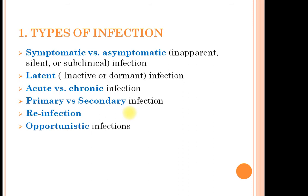Primary infection is the infection produced in the body of the host when the pathogen enters for the first time. Secondary infection is that infection in the host which occurs in the presence of the primary infection — it is produced by a secondary pathogen, which causes infection in the body only when the body is already infected, previously or simultaneously, with the primary pathogen.